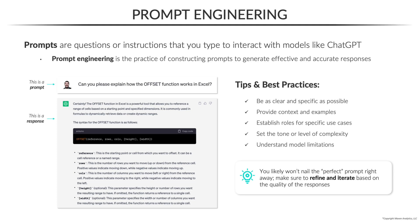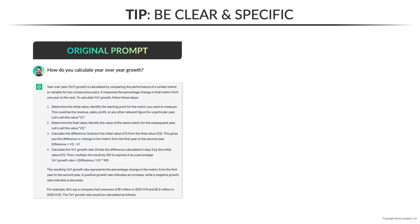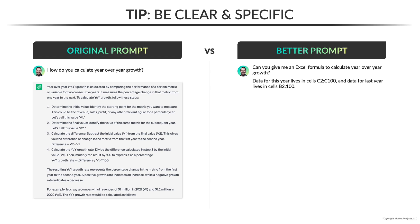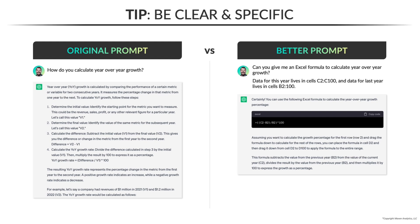Let's take a quick look at some examples of good and bad prompts. Here's an example of a prompt that's a bit too generic: how do you calculate year-over-year growth? Remember that our first tip was to be clear and specific. A better version of that prompt might look something like this: can you give me an Excel formula to calculate year-over-year growth? Data for this year lives in cells C2 through C100, and data for last year lives in cells B2 through B100. Now we get a very specific response back, including an actual Excel formula that I can copy and paste directly into a workbook.